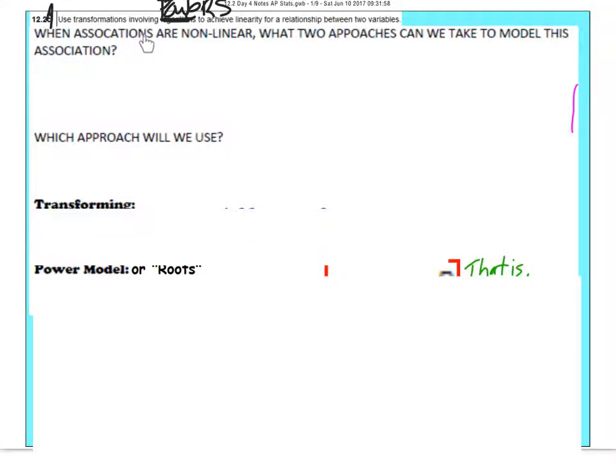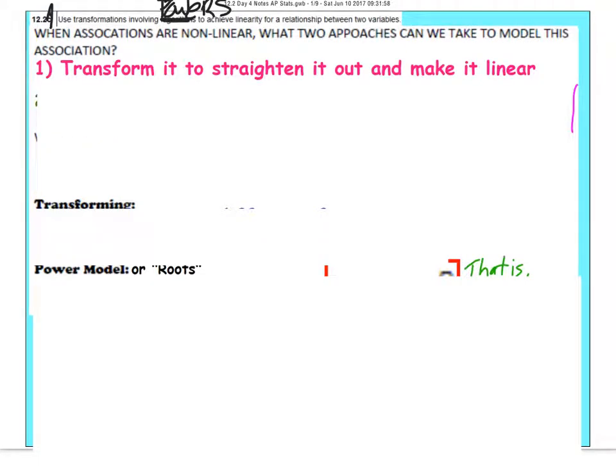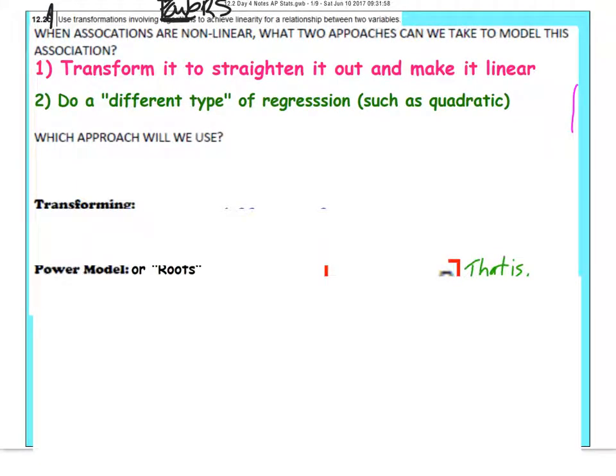When associations between two data sets that are quantitative are non-linear, we have two approaches that we can take to model the association. We can either transform it to straighten it out and make it linear, or we could do a different type of regression like quadratic or exponential. I'm going to tell you, our book is not about method two. We're going to be focusing more on how to straighten it out and make it linear.